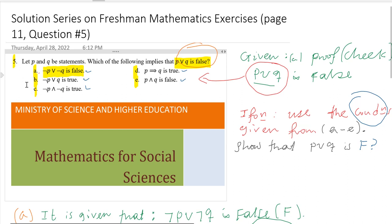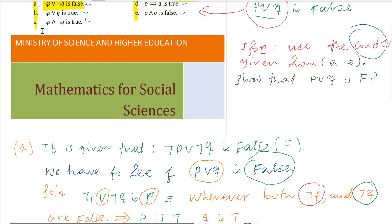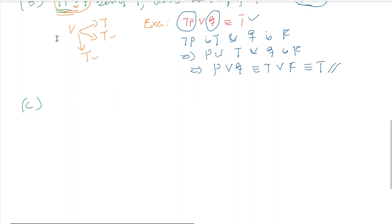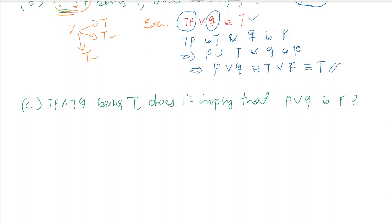For part C, the condition is: negation of P and negation of Q is true. Does it imply that P or Q is false? We will use the properties of disjunction and conjunction. Since negation of P and negation of Q is true, by the conjunction rule, both negation of P and negation of Q must individually be true.